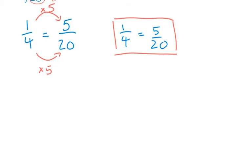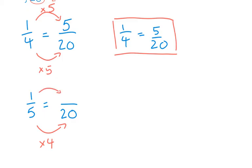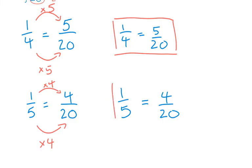Now let's use the same technique for 1 over 5. The new denominator is going to be 20. How do I get from 5 to 20? 5 times 4 gives you 20. What you do to the bottom you also have to do to the top, so multiply the numerator by 4: 1 times 4 is 4. So 1 over 5 is equal to 4 over 20 — these are equivalent fractions, even though they do not look like one another.